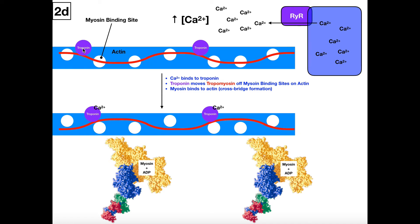There's another protein — troponin — and troponin is kind of the gatekeeper. Troponin, when it's at rest, holds tropomyosin over these binding sites. So if we want to move the tropomyosin, we have to do something to the troponin. Troponin is a calcium-binding protein. When we flood the sarcoplasm with lots of calcium, some of this calcium is going to come over and bind to troponin. When calcium binds to troponin, troponin is going to rotate tropomyosin off of these binding sites, so it's no longer covering the myosin binding sites on actin.